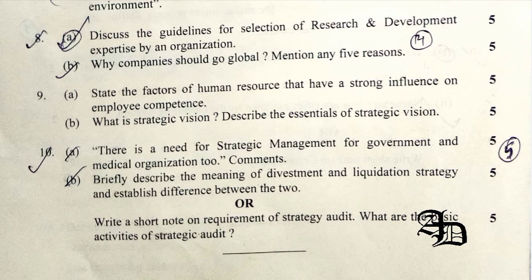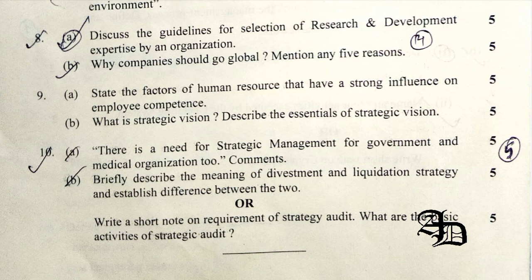Question 10A was related to the need for strategic management in government and medical organizations — you need to write about government and medical sectors separately. Question 10B was related to divestment and liquidation strategy and the differences between them. Divestment strategy involves the sale or liquidation of a portion of a business or major divisions, while liquidation strategy involves closing down a firm and selling its assets. In divestment, efforts are made for the survival of the organization; in liquidation, it is the most extreme form of retrenchment strategy.